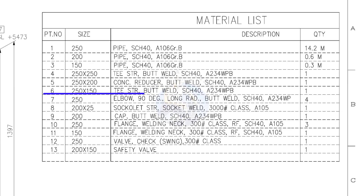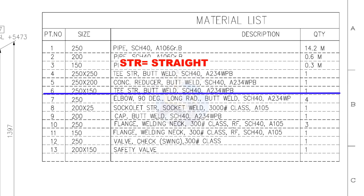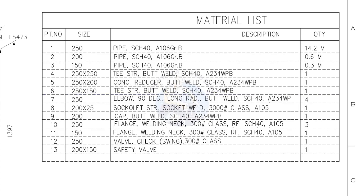Item number 6: 250 into 150 straight T, butt welded, schedule 40, quantity 1. Item number 6: 250 NB, 90-degree long radius elbow, butt welded type, schedule 40, quantity 1.